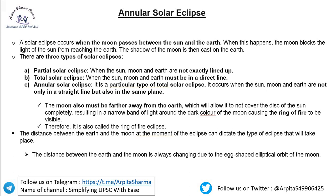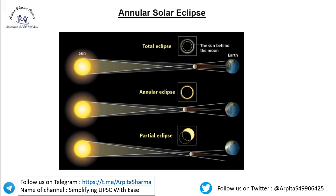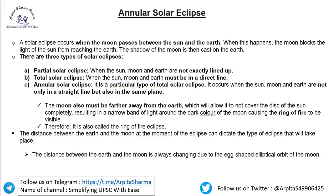There are three types of solar eclipse. First is the partial one, when the sun, moon and earth are not exactly lined up. You can see here this is the partial solar eclipse, when all three are not in the exact same line.